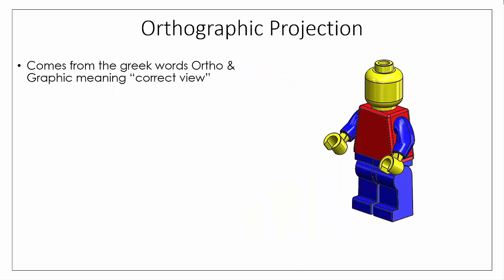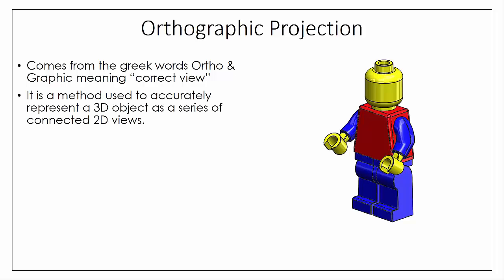We're going to begin by looking at what orthographic projection actually is. The word 'orthographic' comes from the Greek words 'ortho' and 'graphic,' which means 'correct view.' That's what we're trying to achieve — a correct or accurate view or representation of an object. We do this by taking a three-dimensional object and breaking it down into a series of connected two-dimensional views.